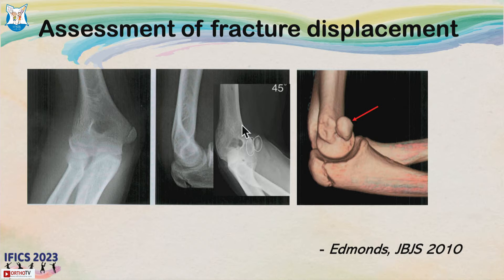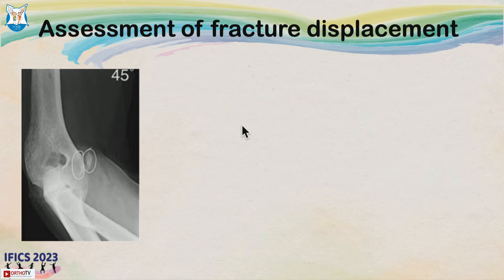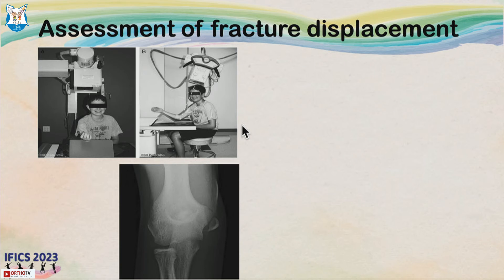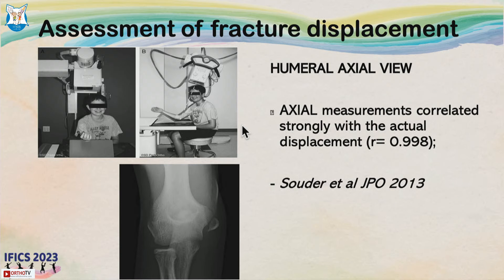Accurate displacement can only be assessed on CT scan, but CT is not necessary in every case. The internal oblique view gives a better assessment than AP or lateral views. An even more specific view is the humeral axial view, done with the elbow in partial flexion and the X-ray beam angled at around 25 degrees to the flexed elbow, which gives an accurate assessment.